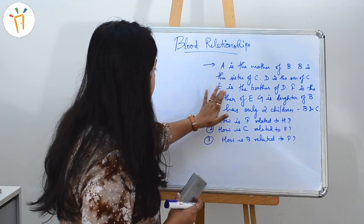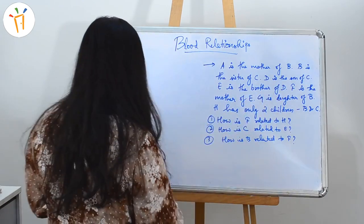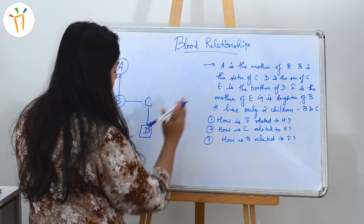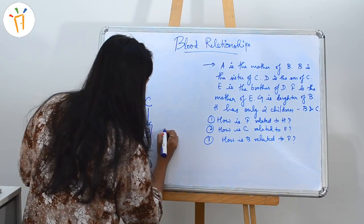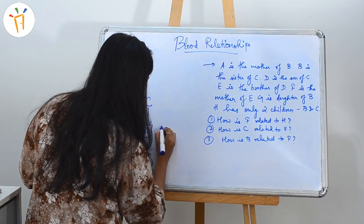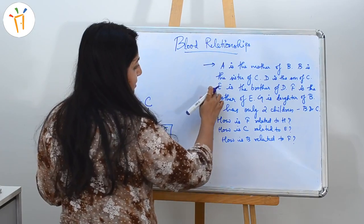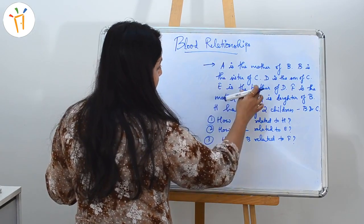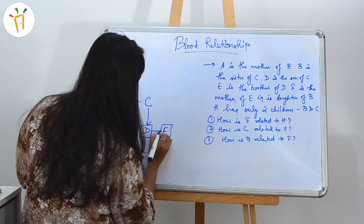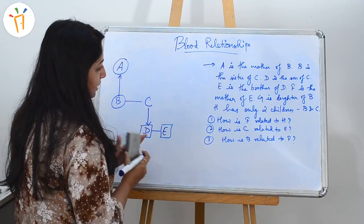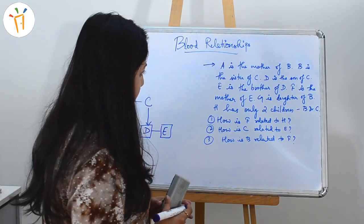The next line is E is the brother of D. If E is the brother of D, then E and D would be siblings, and since E is said to be brother, E is male. We will denote it with a single line, so D and E are siblings here.